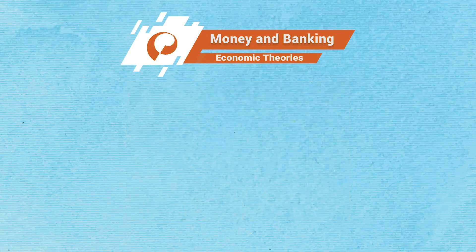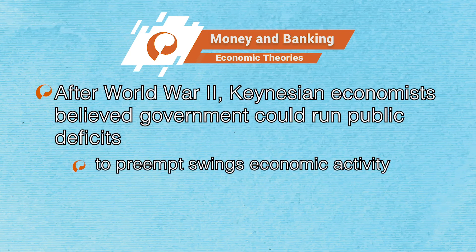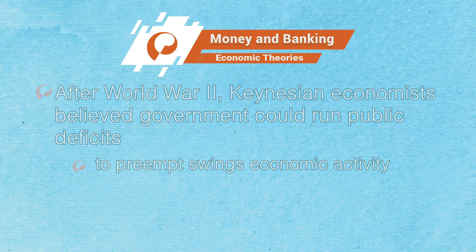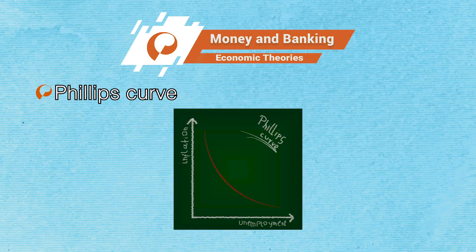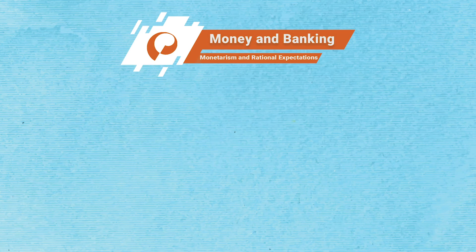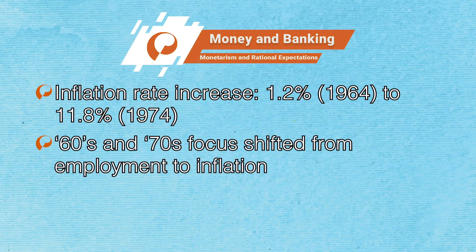After World War II, Keynesian economists believed that the government could run public deficits during economic downturns and surpluses during expansions to fine-tune the economy — that is, to preempt possible swings in economic activity. They also thought the central bank could stimulate the economy with little consequence for the inflation rate. A study of empirical data had found a negative relationship between the inflation rate and the unemployment rate, called the Phillips curve. Some Keynesian economists believed this relationship to be structural and immutable, providing the central bank with a policy trade-off. During the 1960s and 1970s, however, the yearly inflation rate increased from 1.2% in 1964 to 11.8% in 1974, and economists' focus shifted from maintaining full employment to understanding and fighting inflation.